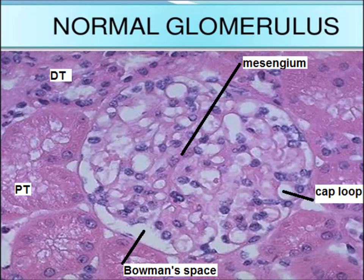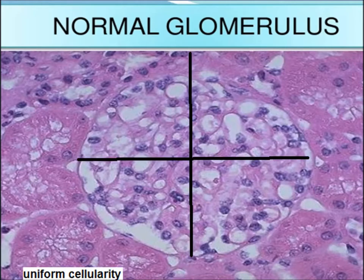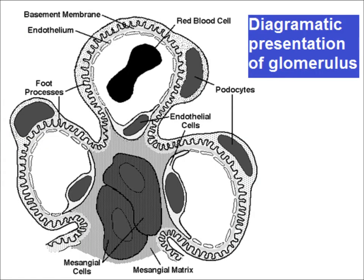This is the normal glomerulus you can appreciate. The glomerulus has fine capillary loops. There is mesangium and there is Bowman's space. If you divide the glomerulus into four halves, there is no difference between the four halves. This is the diagrammatic presentation of the glomerulus under electron microscopy. There is a basement membrane; on one side are endothelial cells, on the other side are epithelial cells, and there is mesangial matrix.